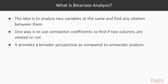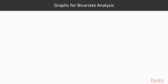Now that we have a fair idea of what bivariate analysis is, let's take a look at a list of graphs that are used for bivariate analysis. In the next video we'll take a look at some of the graphs mentioned in this list. First up we have scatter plots, then mosaic plots.